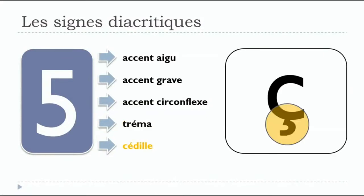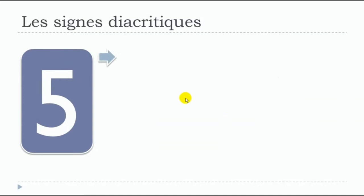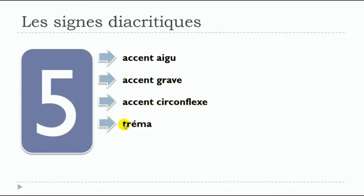And the last one is la cédille, which comes right below your C letter. So remember: l'accent aigu, l'accent grave, l'accent circonflexe, le tréma, la cédille. In this video it's only to present these five signs. In the next lessons I will focus on explaining how to pronounce them, because the pronunciation will change — if you put l'accent aigu on top of E, you won't pronounce it like you would without the accent.